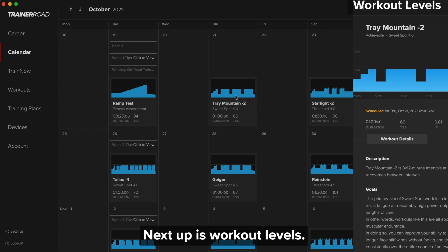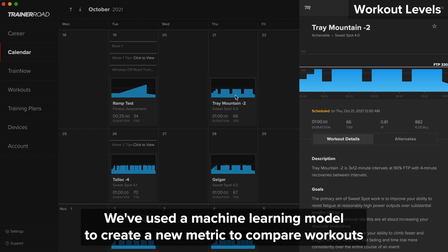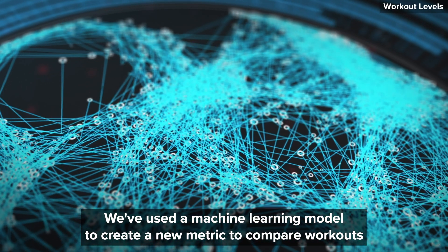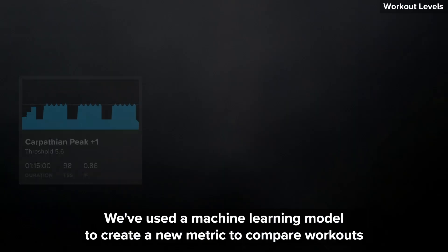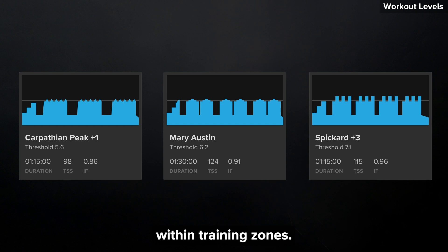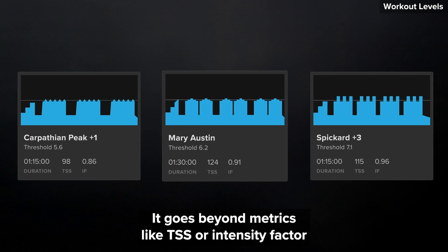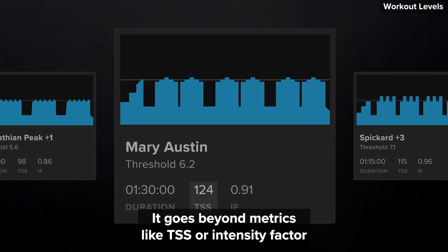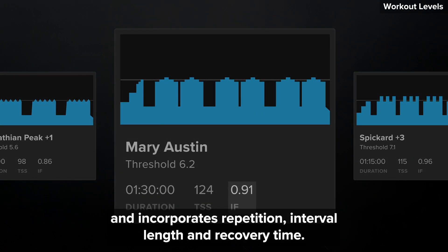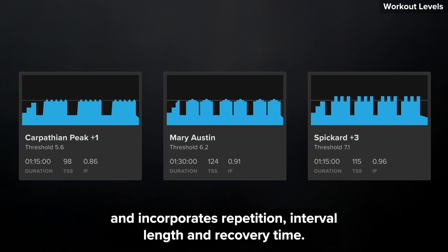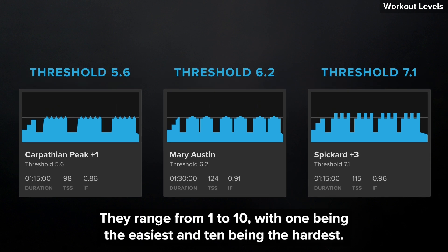Next up is workout levels. We've used a machine learning model to create a new metric to compare workouts within training zones. It goes beyond metrics like TSS or intensity factor and incorporates repetition, interval length, and recovery time. They range from 1 to 10, with 1 being the easiest and 10 being the hardest.